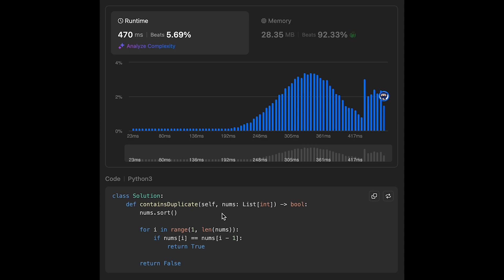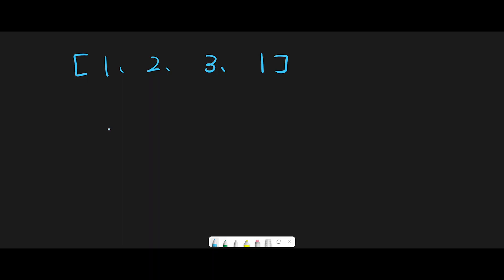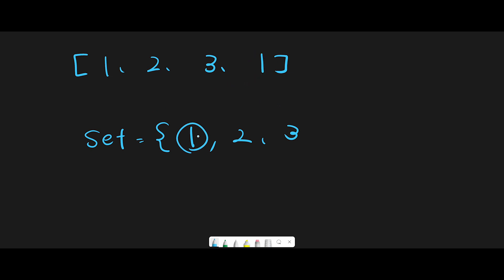The second way to solve this question is to use a set. Every time we find a new number, we check the set — if we have the same number, return true; if not, add the current number to the set. We find 1, the set is empty so we add 1. We find 2, no 2 in set so we add 2. We find 3, no 3 in set so we add 3. We find 1 again, and 1 is already in the set, so we return true.